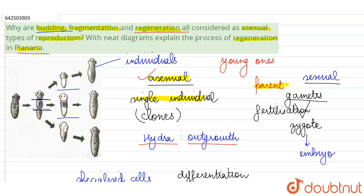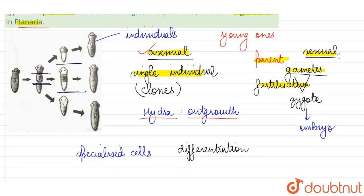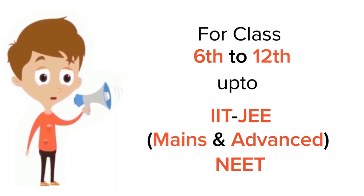Because of these specialized cells, planaria can show this kind of asexual process. As seen in the diagram, after being cut into pieces, each piece has the ability to regenerate into new individuals with the help of specialized cells. So we place all these processes under asexual reproduction because a single individual is involved, with no gametes, no fertilization, and no male and female parents. These specialized cells undergo differentiation to make different kinds of tissues.